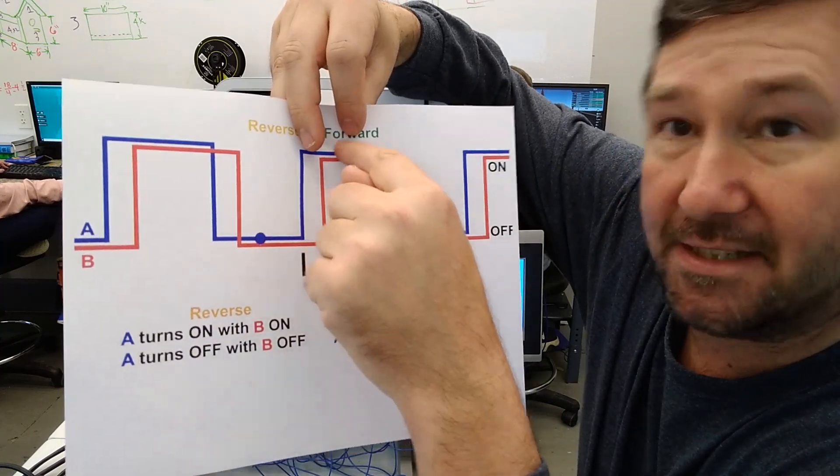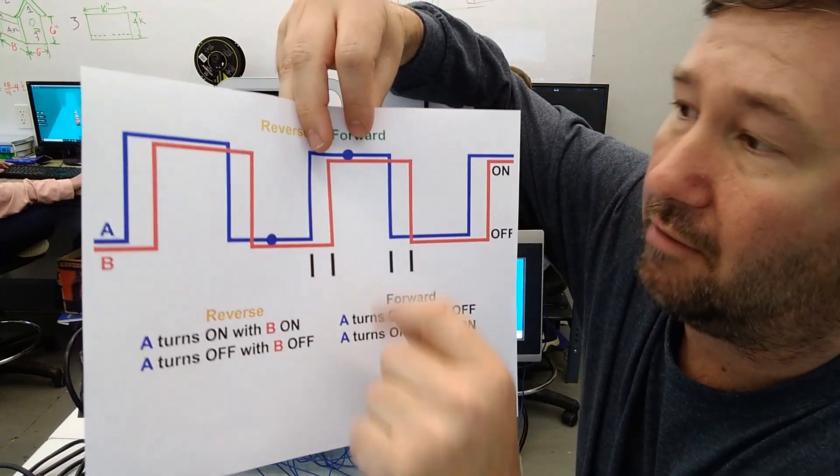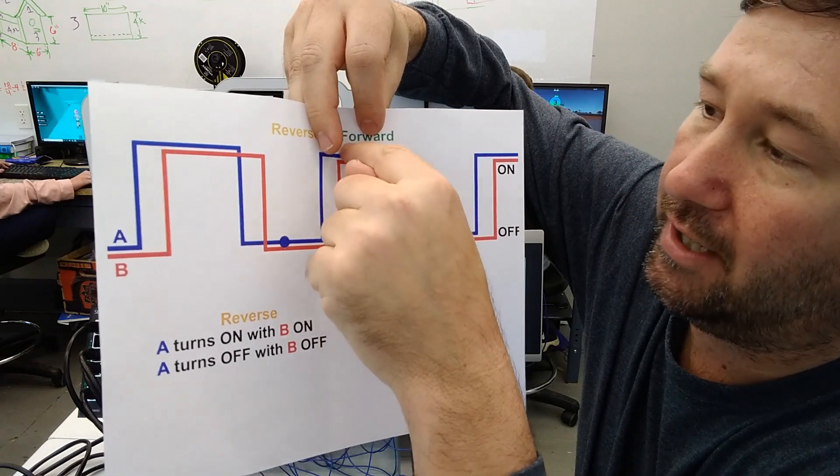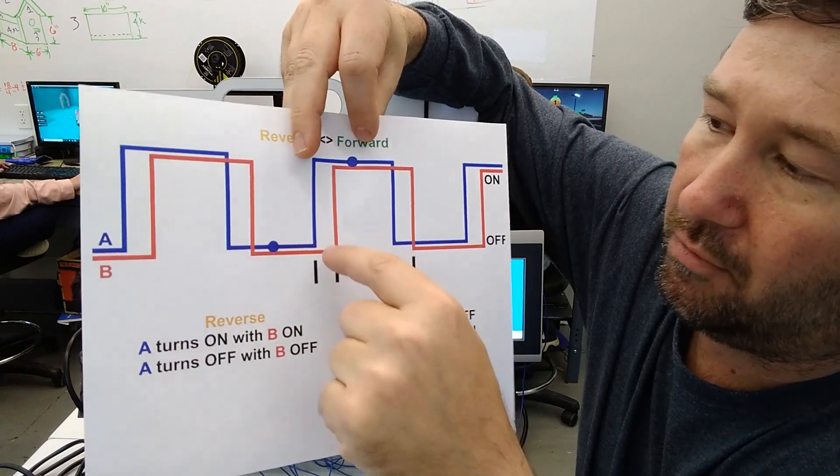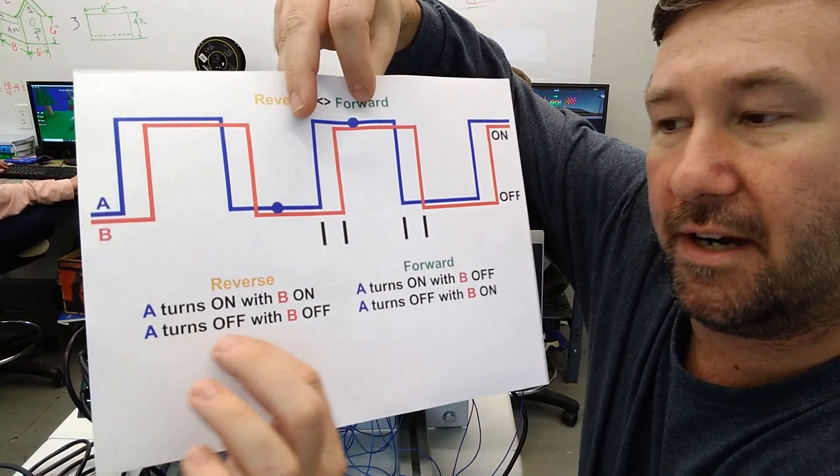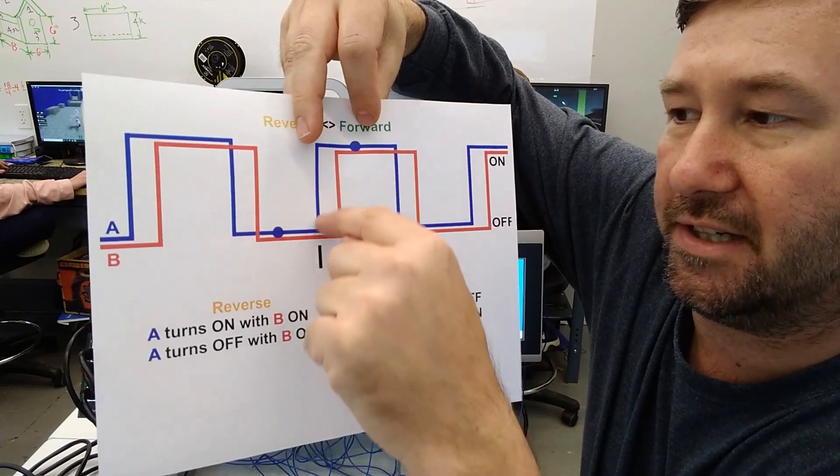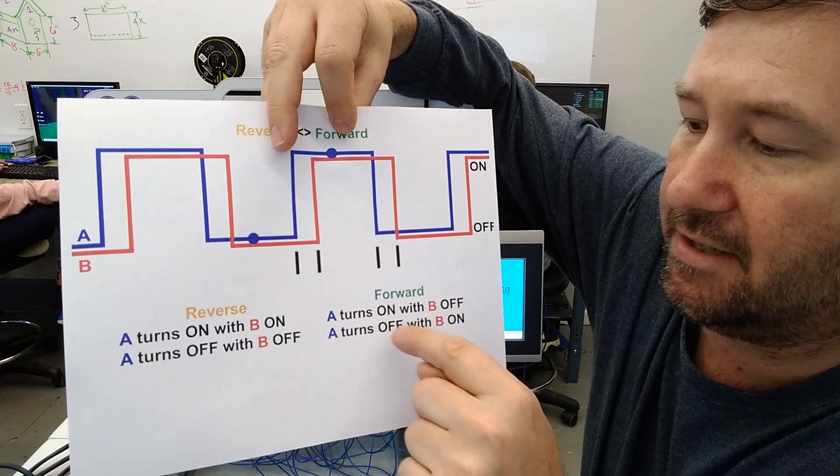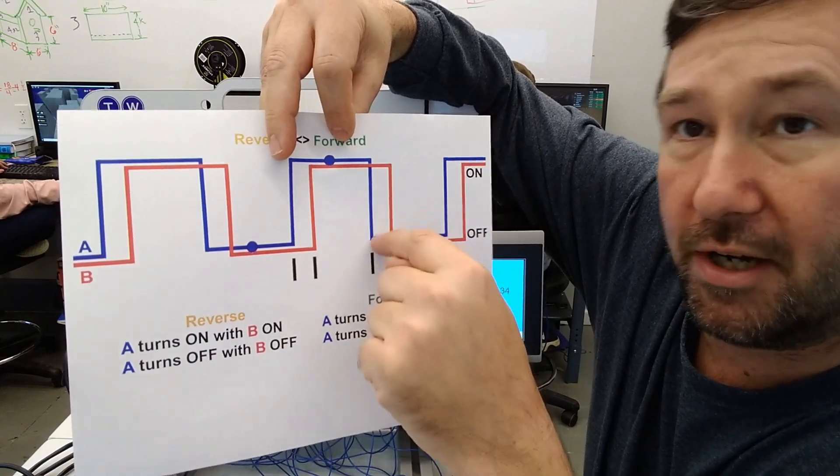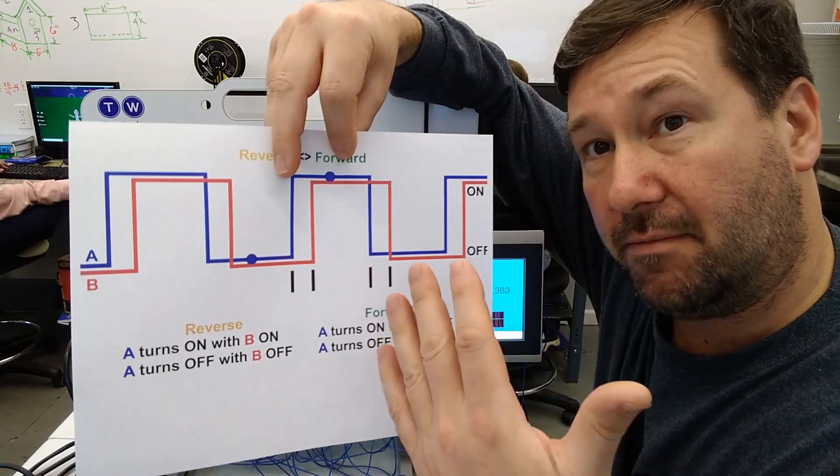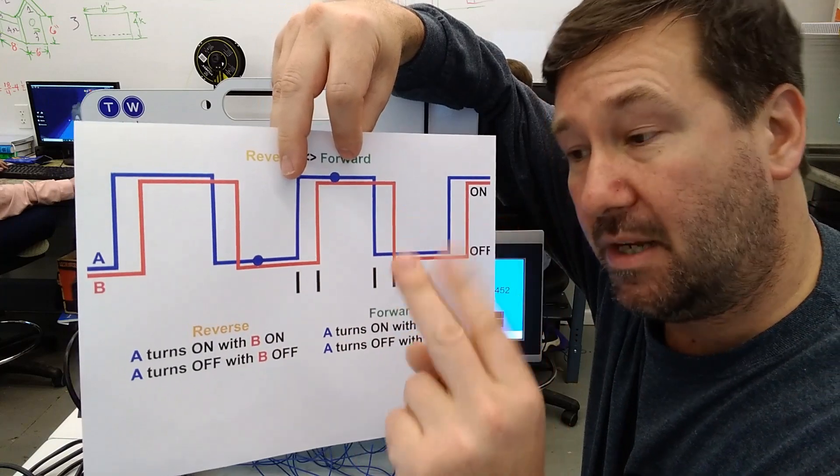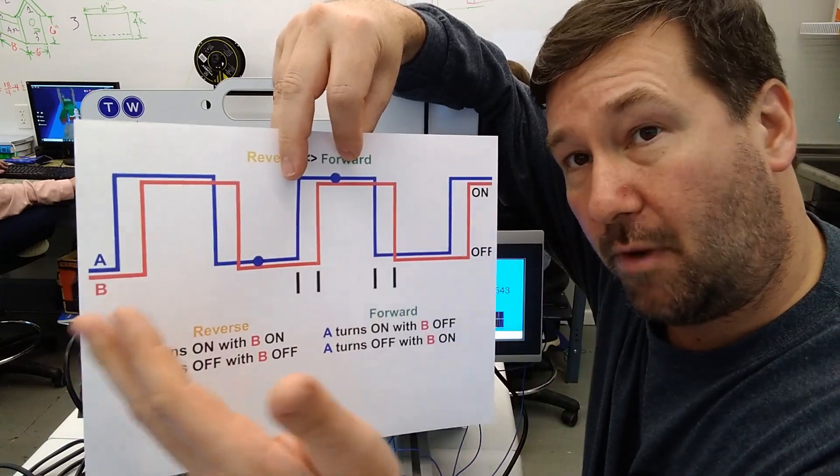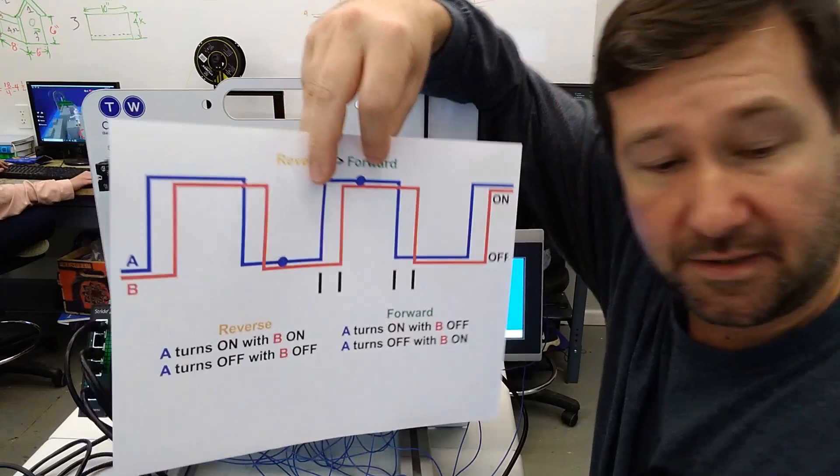And then finally we have A is on and it's turning off. So first we could have A on and it goes off with B off. And that's right here. And that's going to be reversing. And then the other side is forward. If A turns off with B on, we're moving forward. So now we've been able to determine with the A and B marker, both our direction and two counts.